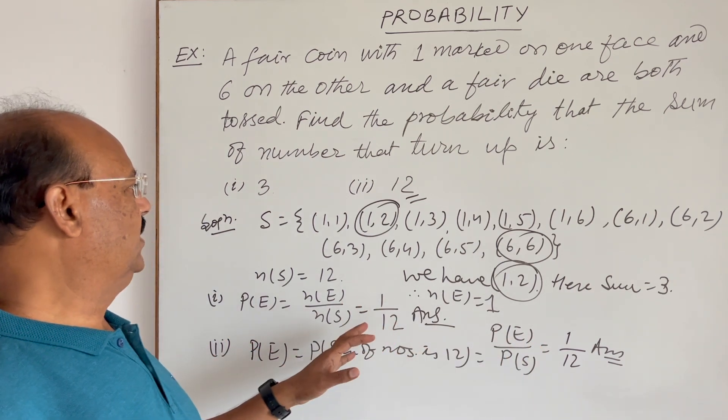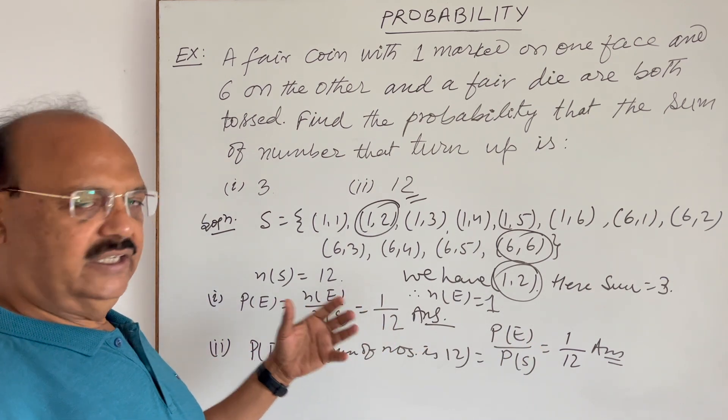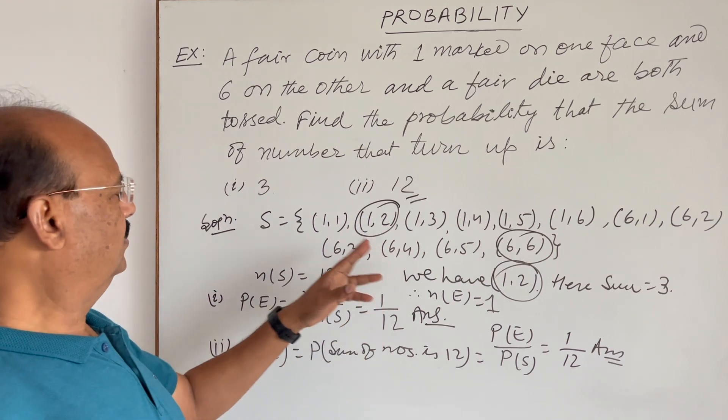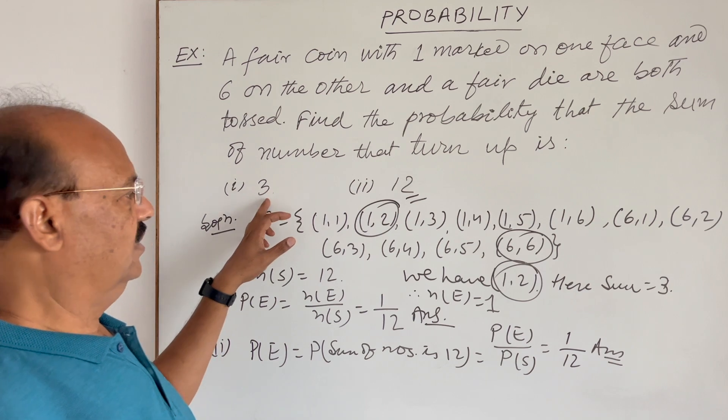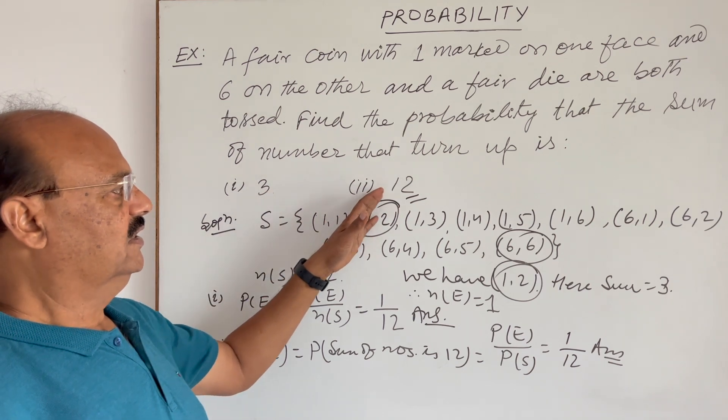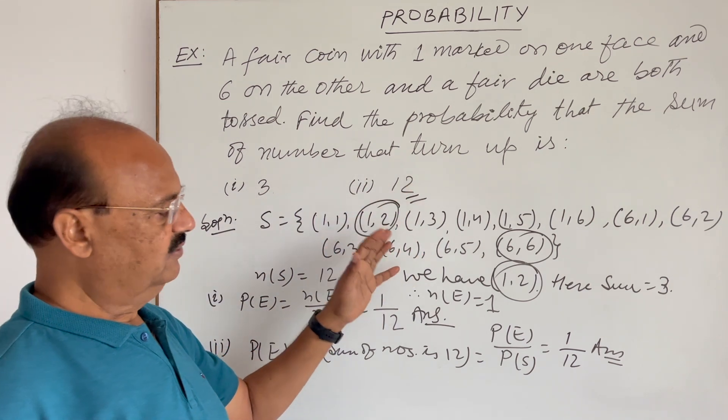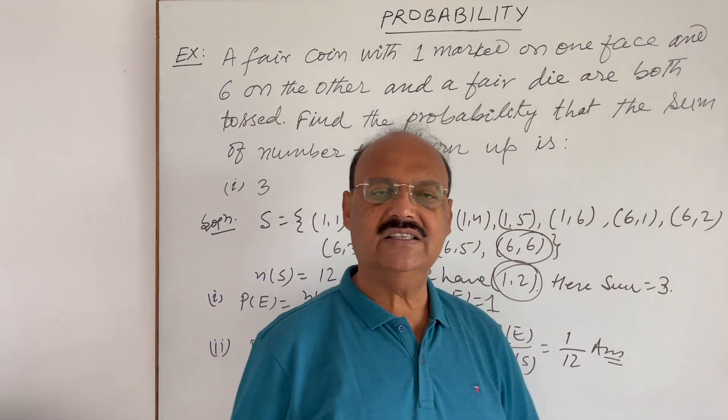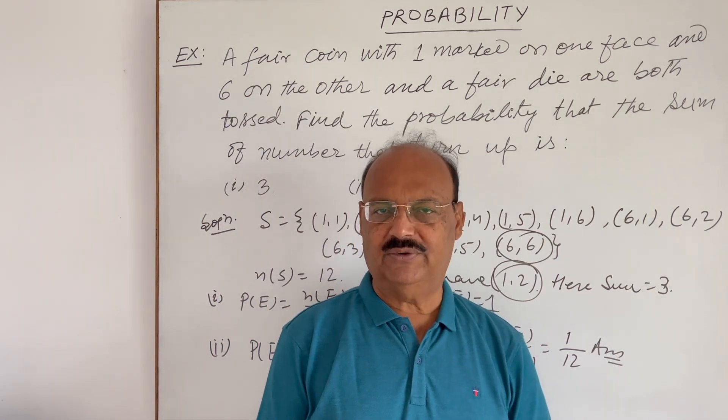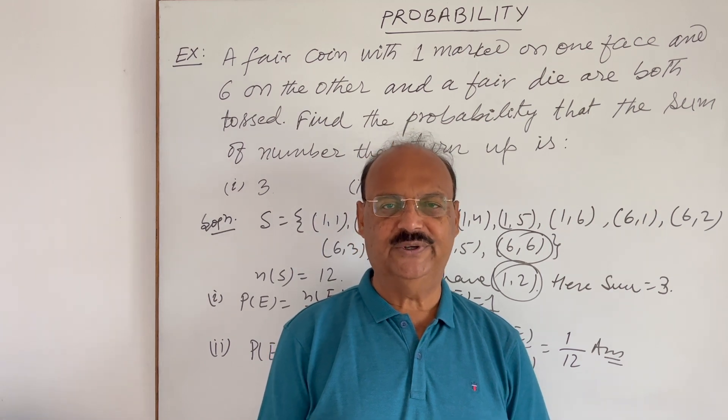So here one by twelve is the probability of getting an event where sum of two outcomes, means two numbers in each ordered pair is three, and in second case sum of numbers is twelve. Very interesting question, hope you have understood it, remain in touch with this channel, PsyQ learning, and get benefit of it. Thank you very much for watching this video, wish you all the best.